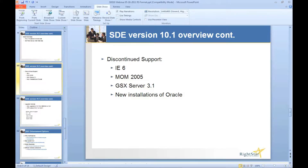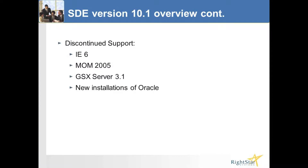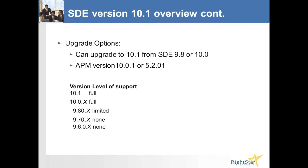Just a couple more slides and then we'll look at the actual product. Be aware that when you go to 10.1, they are no longer supporting IE6, NX46, Microsoft Office Manager 2005, GSX, and VMware 3.1. They're also not allowing new installations of Oracle as the underlying database. For current Oracle users, you can upgrade to 10.1 and your Oracle will still be functional. If you're on 9.8 or 10, you can go straight to 10.1 - the first time they've let you skip a level. If you're on a version earlier than 9.8, you'll need to upgrade to 9.8 before going to 10.1.